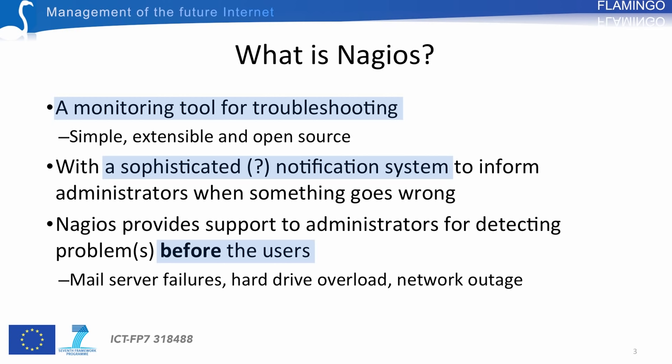For instance, Nagios can be used to monitor your network infrastructure at various levels in order to detect mail server failures, hard drive overloads, and network voltage. It may also be used to monitor external services outside your infrastructure, such as services provided by the cloud.